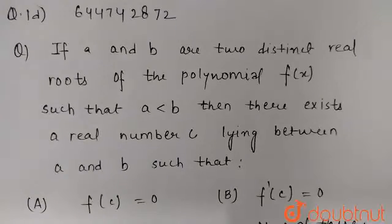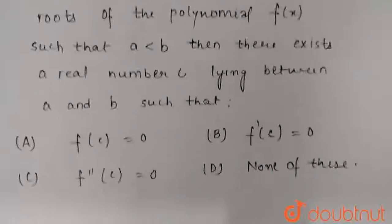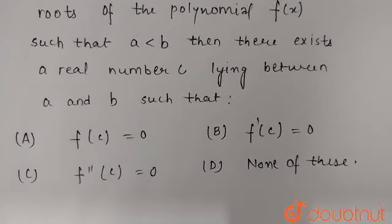Hello everyone! The question is, if A and B are two distinct real roots of the polynomial f of x such that A is less than B, then there exists a real number C lying between A and B such that we have to find the condition which will fulfill all the given conditions.